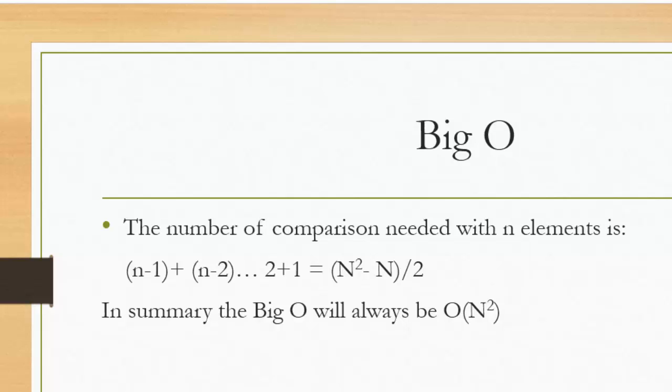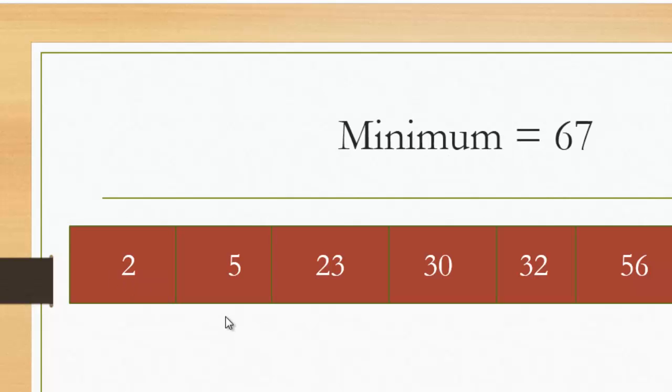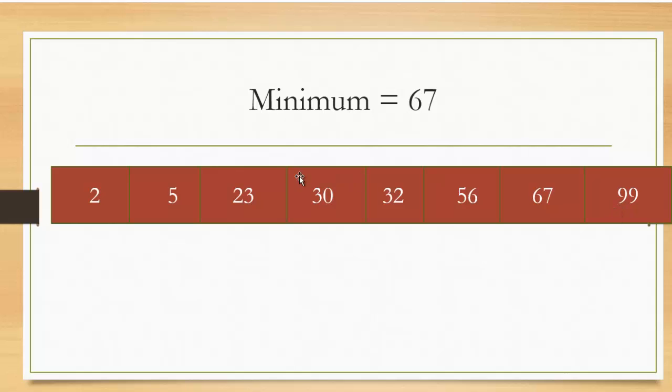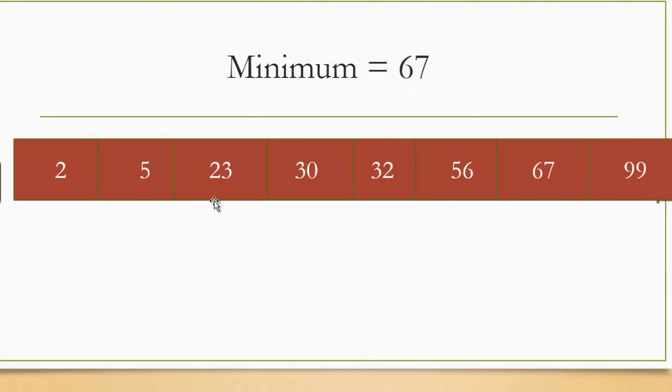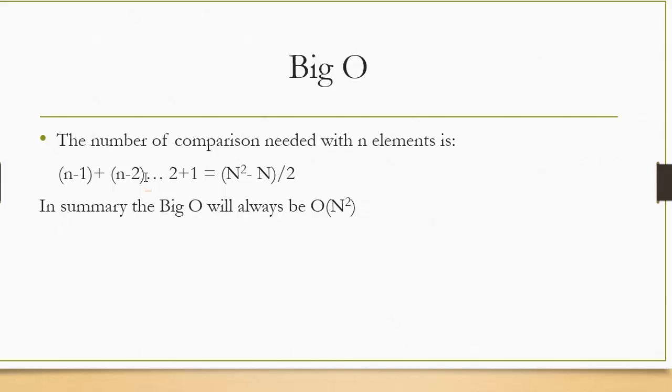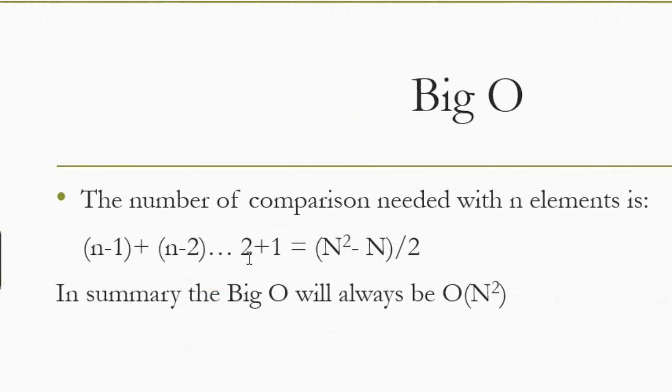Now if you noticed, if there were n elements I needed to loop through the array a corresponding amount of times. For the first iteration I had to check positions one through seven and that would correspond to n minus one times, and then for the second iteration I had to go through positions two through seven and that's n minus two. And as you can see that will keep on decreasing until I get two plus one. And this addition of numbers equivalently equals out to about n squared minus n divided by two. So we can always say that the selection sort will always be a quadratic sort and have a big O of n squared.